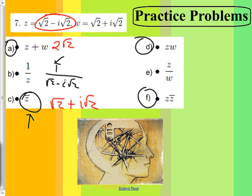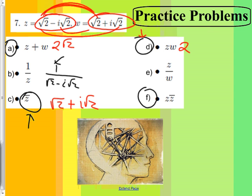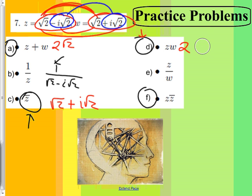Next is D: Z times W. Root two times root two makes root four, which is two. The outside and inside terms happen to be conjugates, so they cancel. The last terms give negative i squared times root four. Root four is two, and negative i squared makes positive one because there were two negatives. So that makes four.